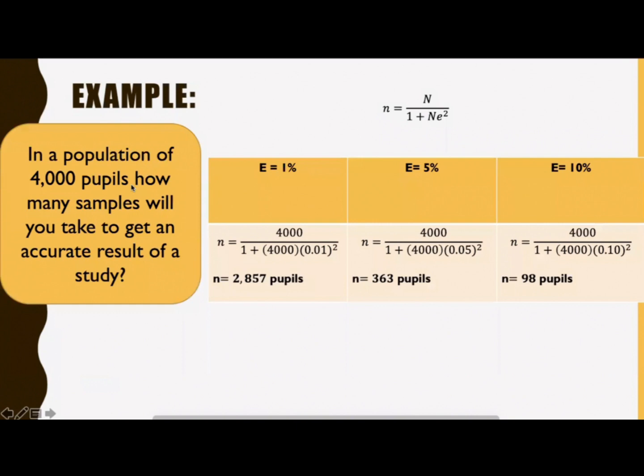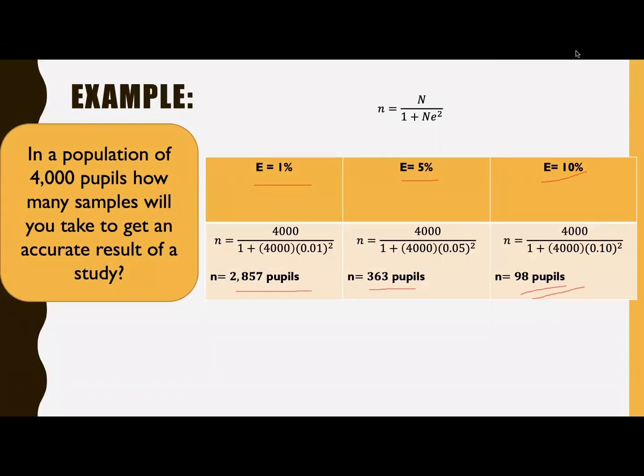If the margin of error is 10%, substitute in the formula. You have 4,000 divided by 1 plus 4,000 times 0.1 squared. The answer is 98 pupils.